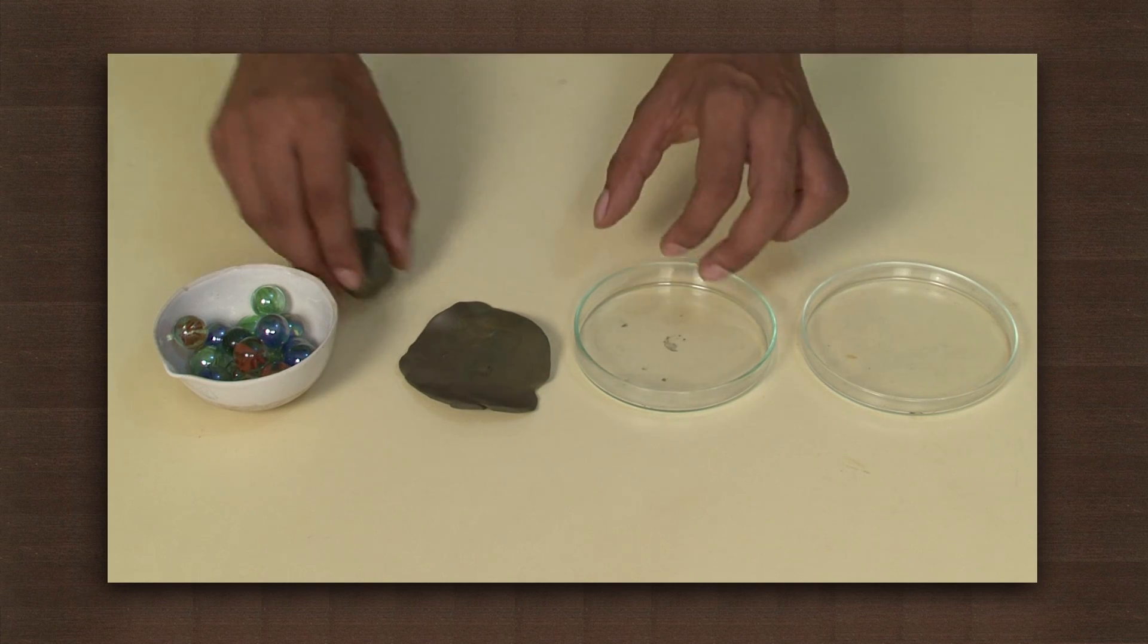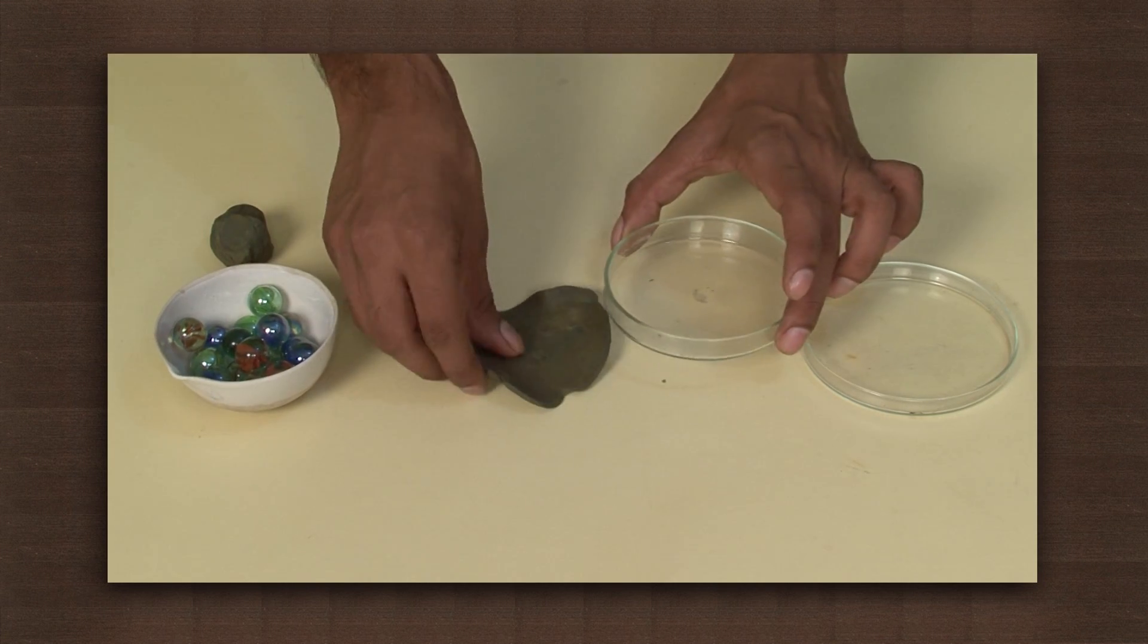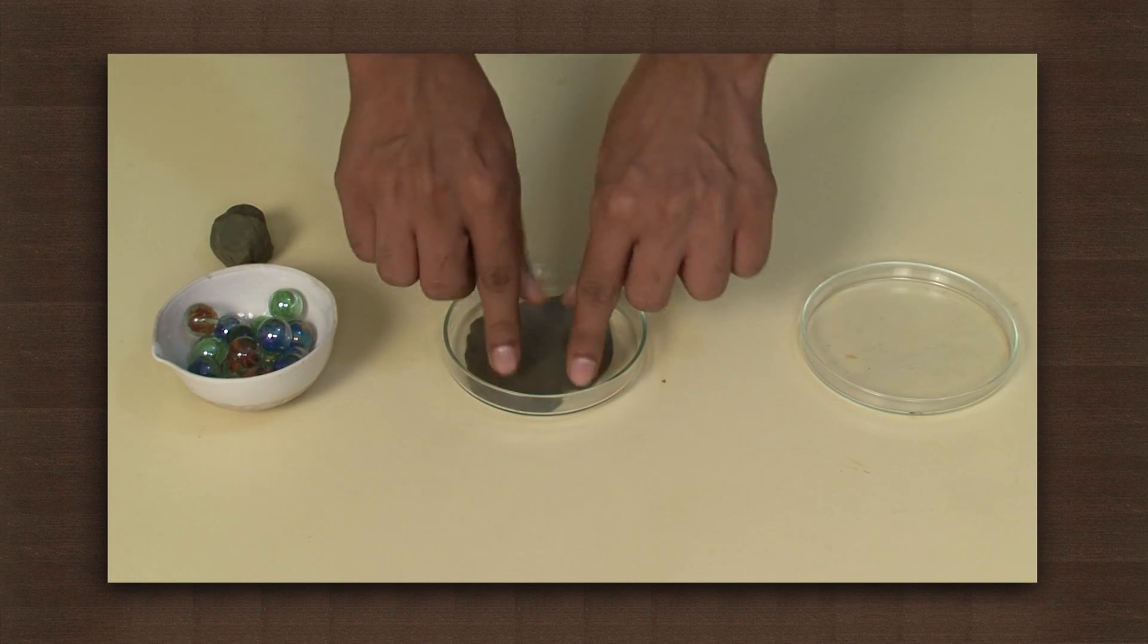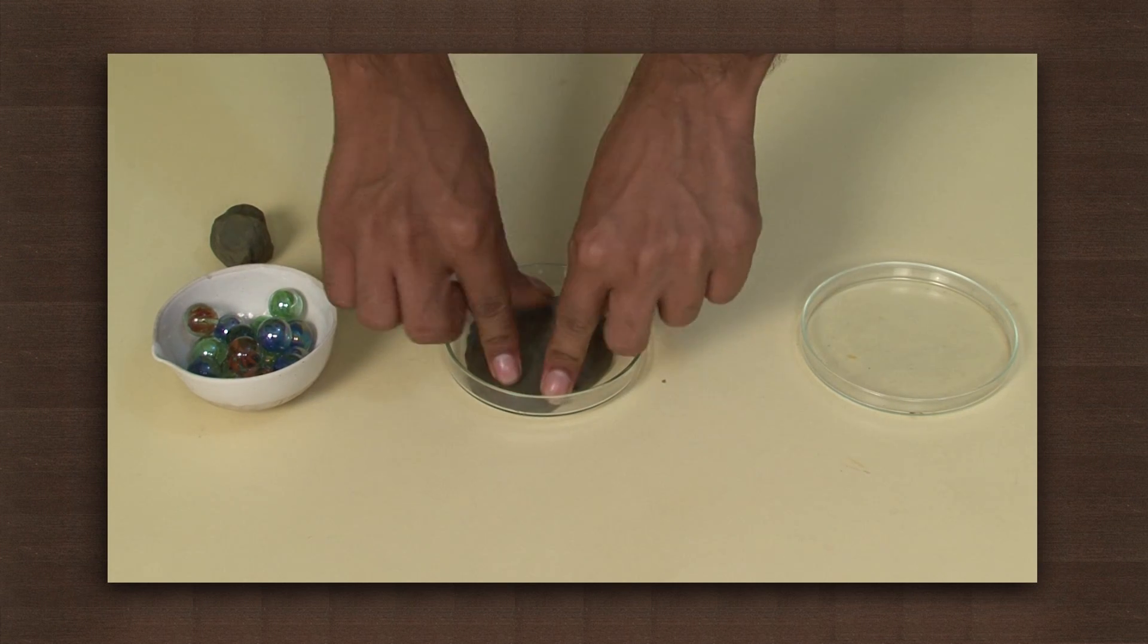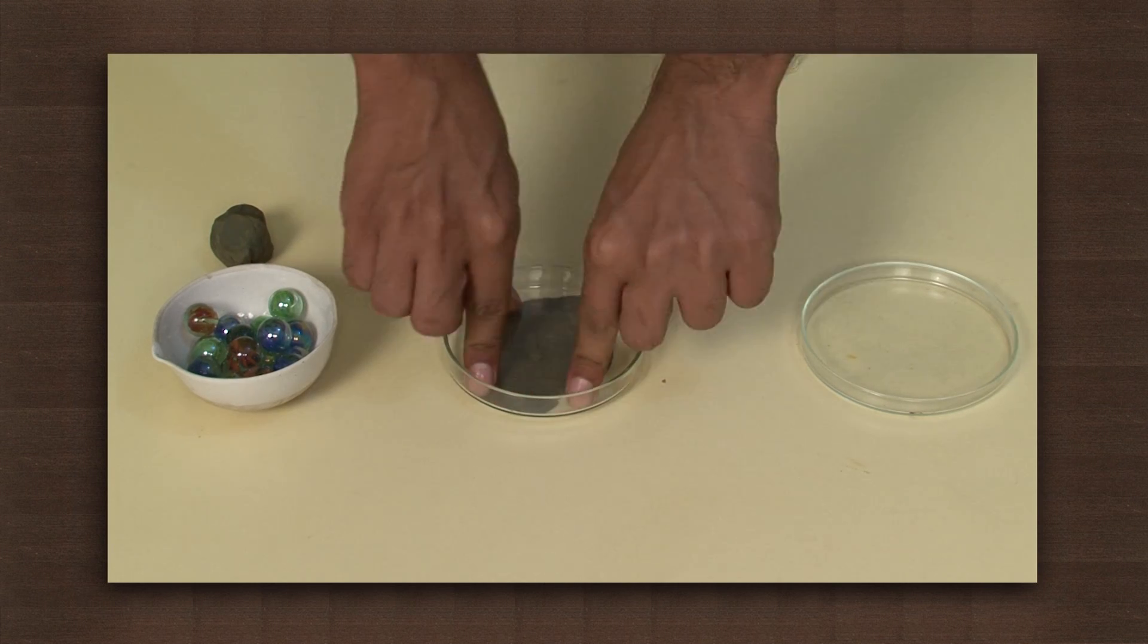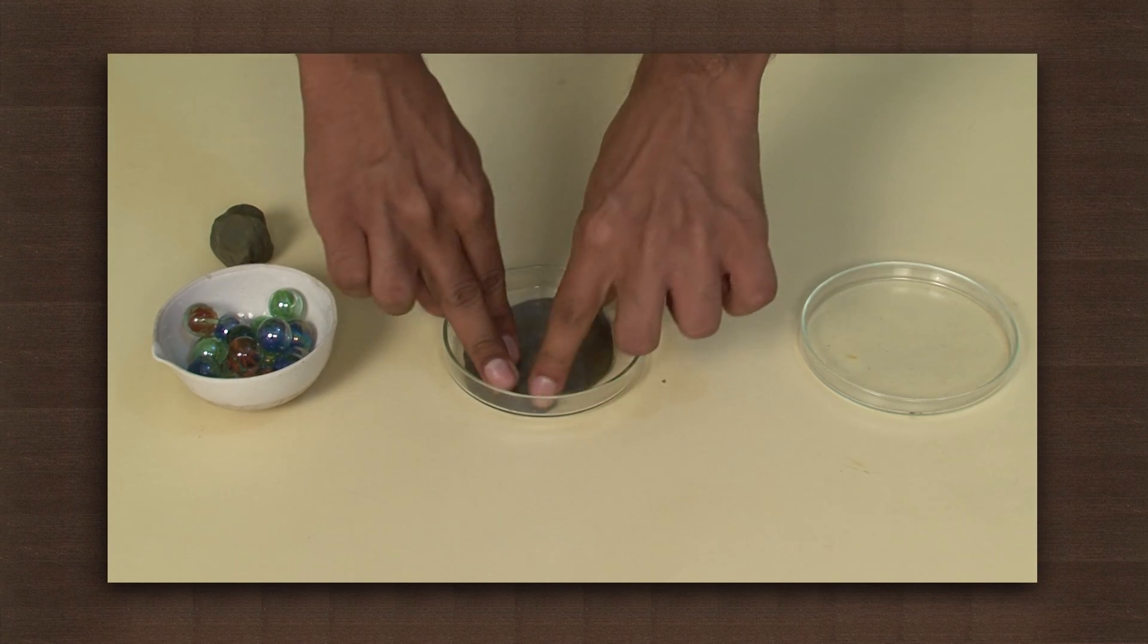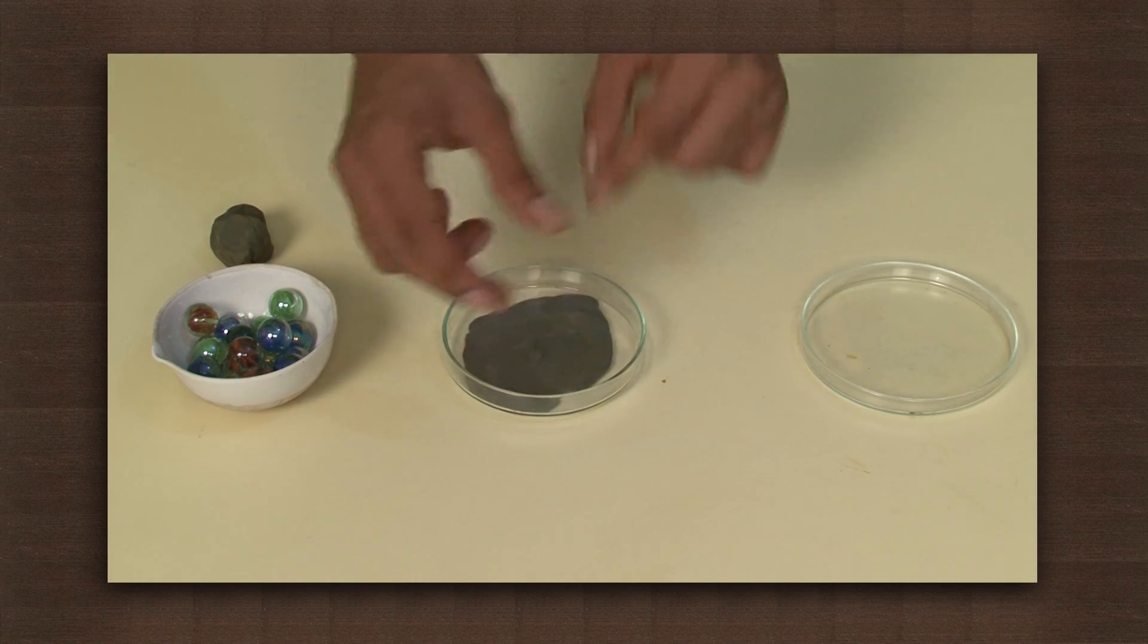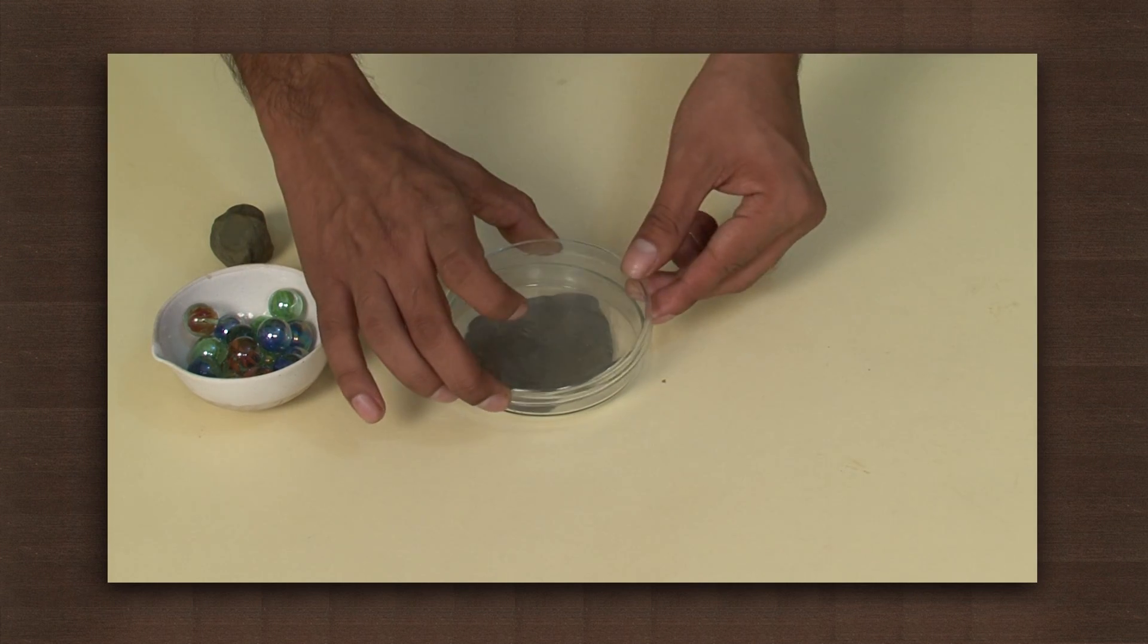Stick the small petri dish on the surface with plasticine. Place the bigger petri dish over it.